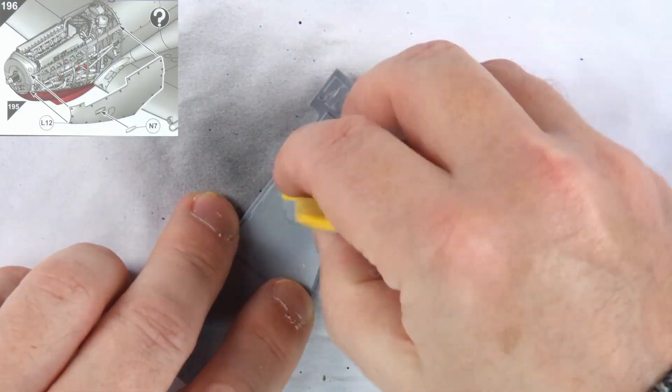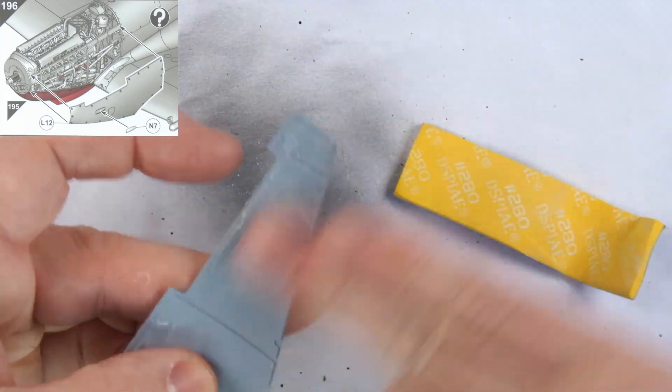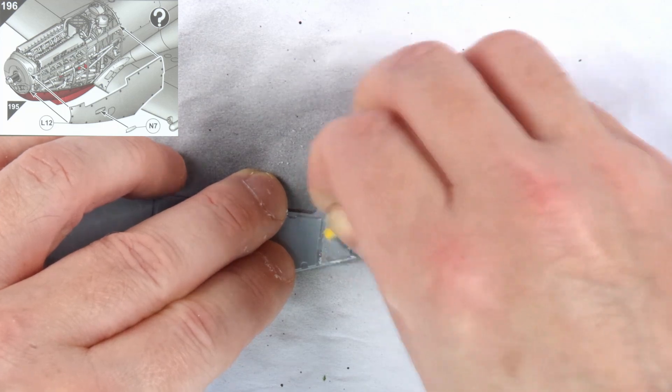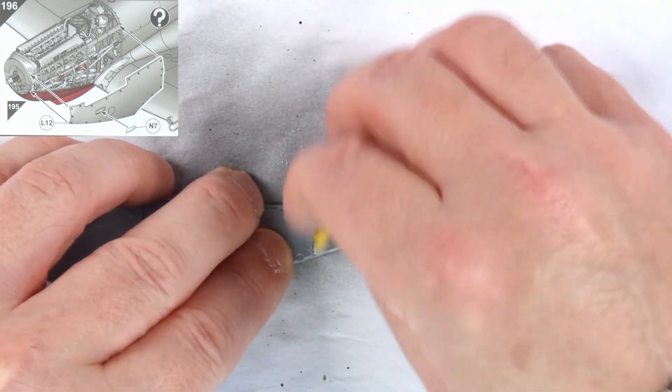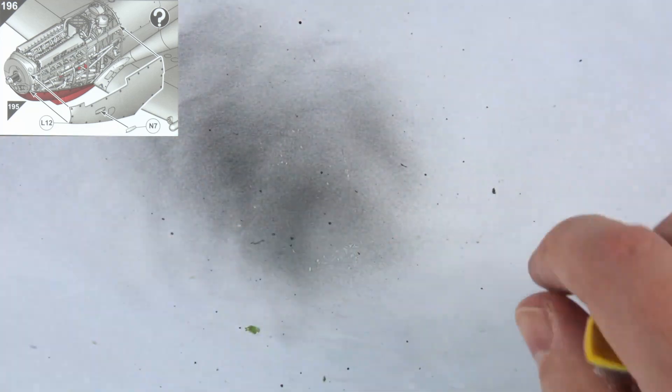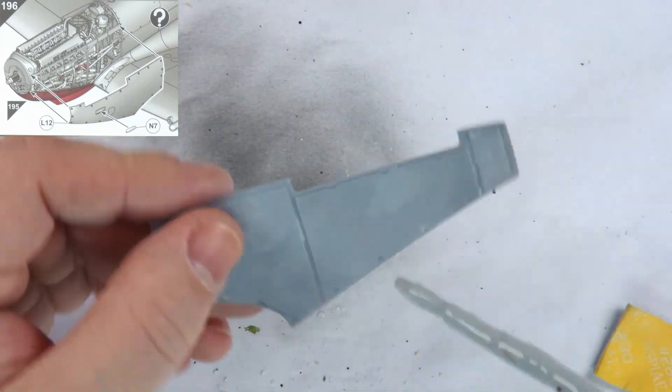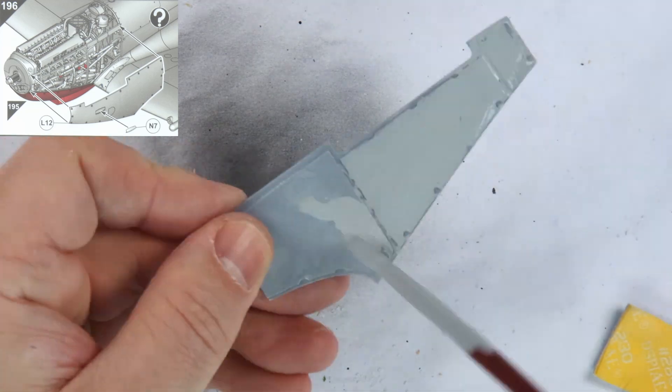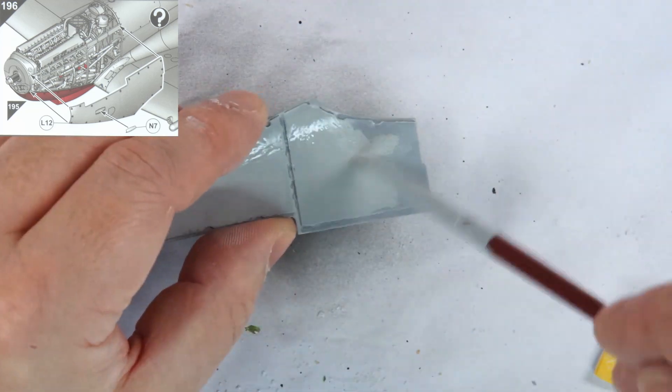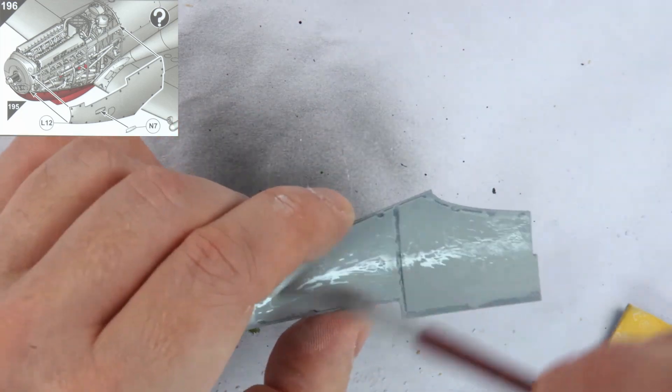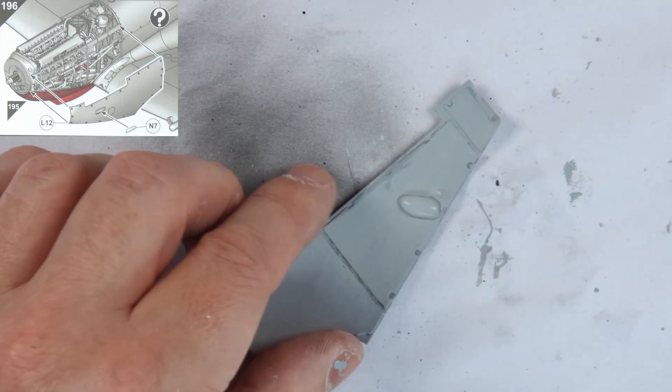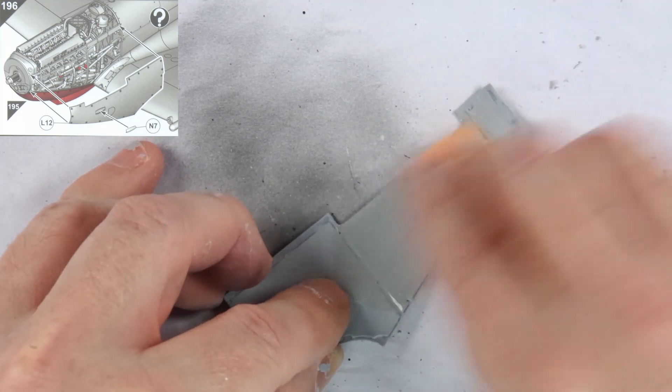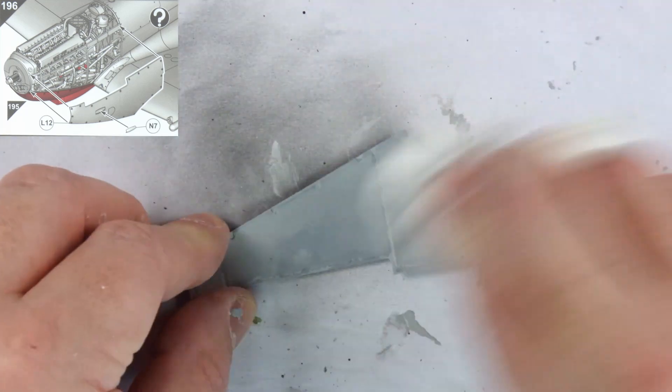Step 196 deals with the port engine cover, and as I wanted to be able to display this open, I needed to remove the ejector pin marks which I'd already filled with sprue goo. I did this with the trusty sanding pads. I then again painted with Mr. Surfacer 500, then wet sanded this, and finally cleaned it up with tissue.